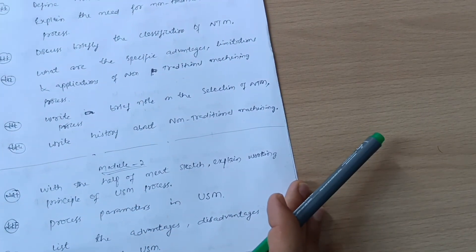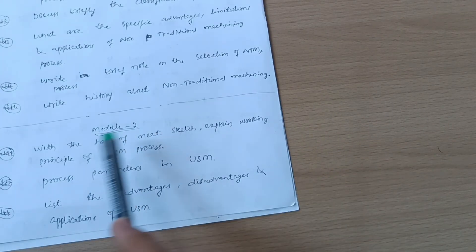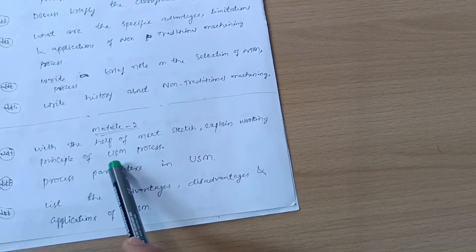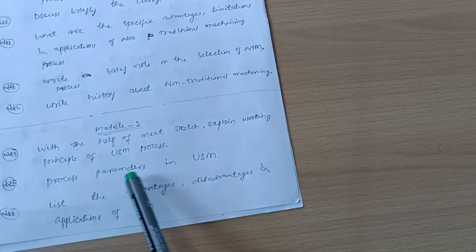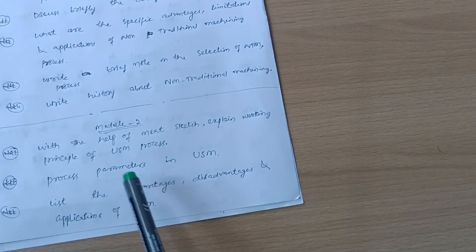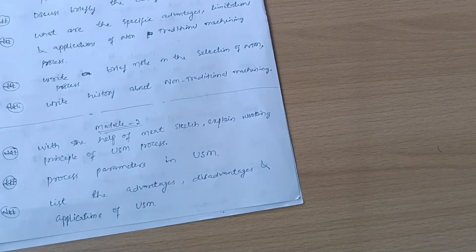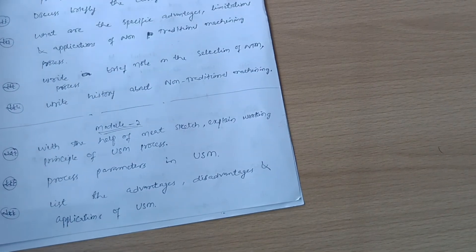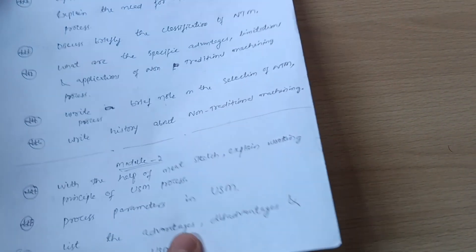This is all about model first. Go through these six questions and you can easily score 20 marks. Next is model second: with the help of neat sketch explain working principle of USM process, discuss process parameters in ultrasonic machining process, and list the advantages disadvantages and applications of USM. These three questions are enough to cover model second. Your main focus should be on explaining working principles, limitations, advantages and disadvantages. You have to practice diagrams as it is a diagrammatic subject. Visual aids in engineering examinations are crucial, so better to go through all the diagrammatic part and practice well for neat sketches.